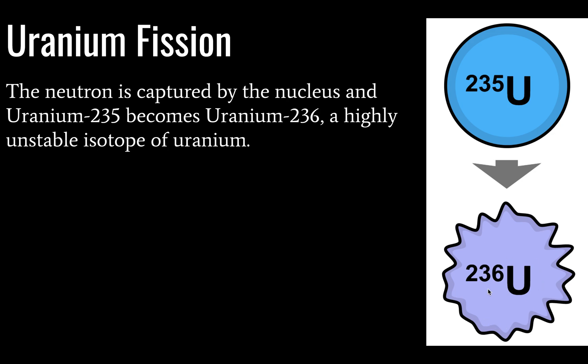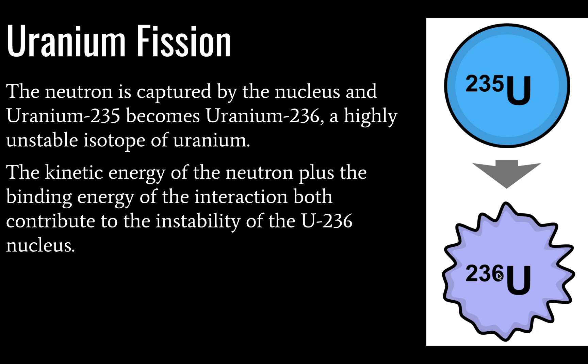This then is going to undergo fission almost immediately, where the nucleus will split apart. So we added a neutron to uranium-235, it becomes uranium-236, much less stable. The kinetic energy of the neutron and the binding energy of this interaction contribute to the instability of an already very unstable nucleus.